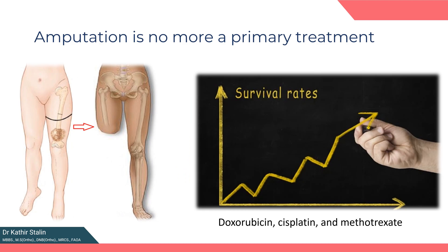Traditionally, amputation was the primary treatment for osteosarcoma, but survival rates were disheartening, ranging from a mere 10% to 20%. However, the advent of multi-agent chemotherapy has brought a new era of hope. Through the administration of doxorubicin, cisplatin, and methotrexate, long-term survival rates have witnessed a dramatic improvement, and limb salvage procedures have become a possibility, sparing the patient the trauma of amputation.